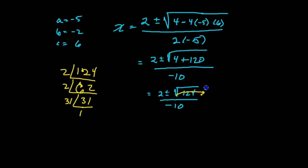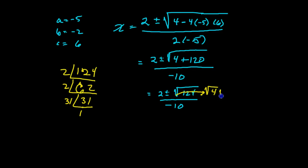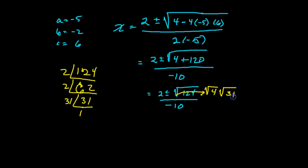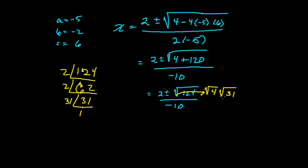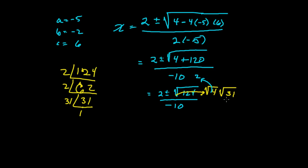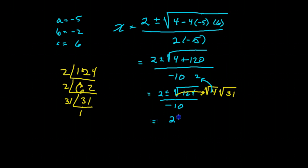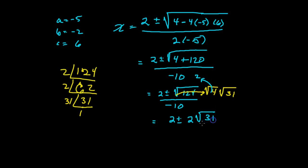So I know that 124, another way to write that, would be the square root of 4 times the square root of 31. And we know that the square root of 4 is 2. So a 2 is actually going to come out of the radical there.